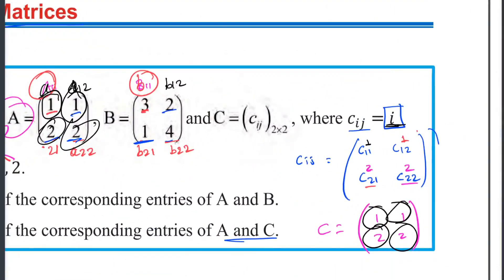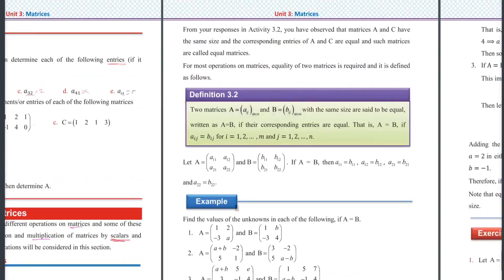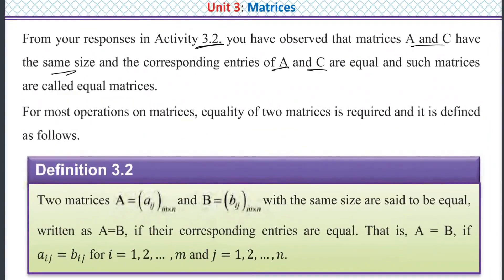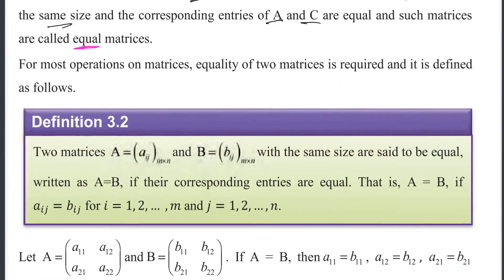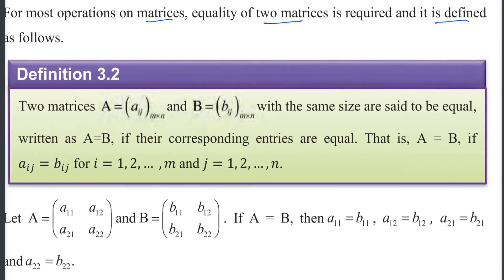The size is the same — A and B are both 2 by 2 matrices, size is the same. Corresponding entries are equal. Such matrices are called equal matrices. For most operations on matrices, equality of two matrices is required, and it is defined as follows. Matrix equality is defined as such.